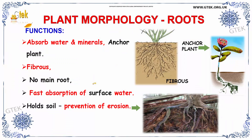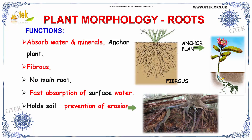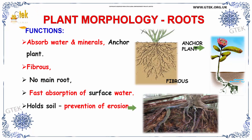Let us see about roots. Its function is to absorb water and minerals — that is, it anchors the plant. You can see anchor plant here. It absorbs water and minerals from the land. It has a fibrous root, depicted here. There is no main root. It firstly absorbs surface water and it holds the soil to prevent erosion. You can see the root holding the soil.